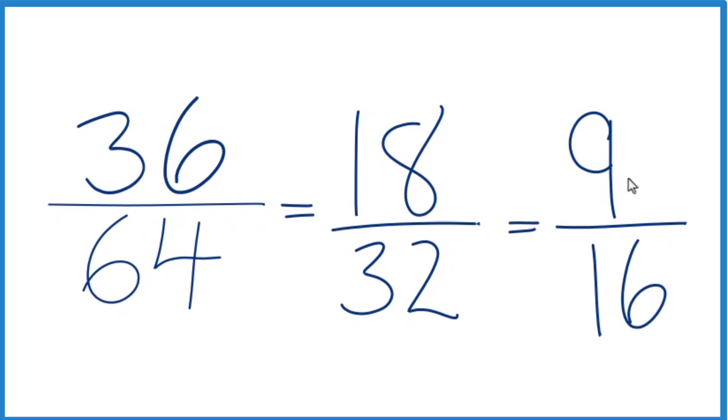We can't reduce 9 sixteenths any further. The only common factor, the only number that goes into 9 and 16 evenly is 1. So when we reduce the fraction 36 over 64, we end up with 9 sixteenths.